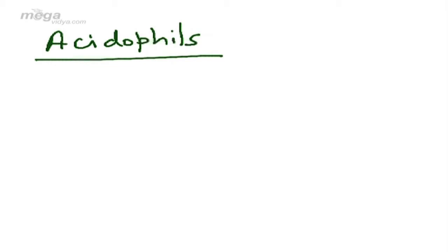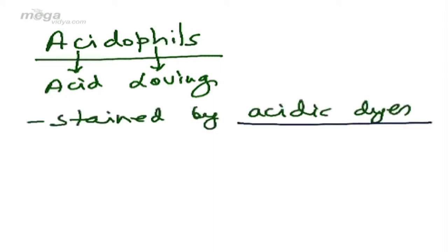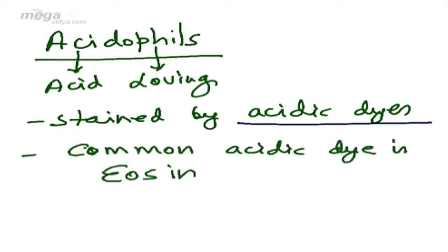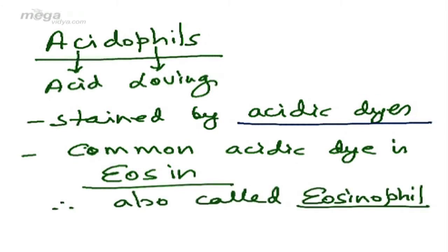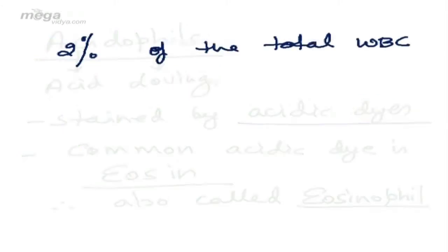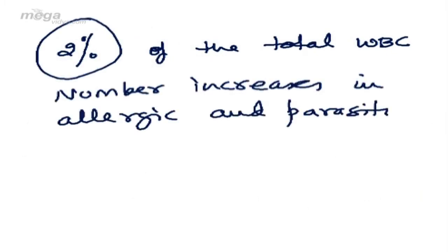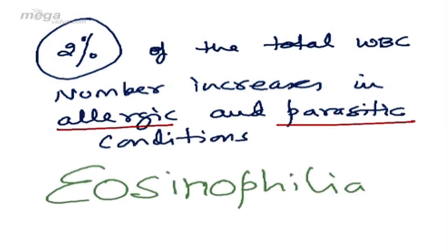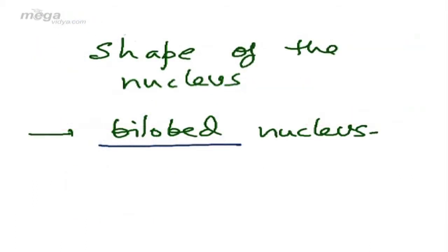The first WBCs are acidophils. As can be seen by the name, these are acid loving or they are stained by acidic dyes. One common acidic dye is eosin. Therefore acidophils are also called eosinophils. They constitute about 2% of total WBCs. The number increases in allergic and parasitic conditions—this condition is called eosinophilia. Very important question asked in entrance: the shape of the nucleus. They contain a bilobed nucleus.